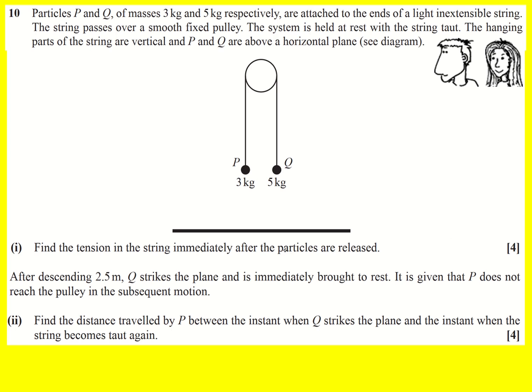Find the tension in the string immediately after the particles are released. Well let's look at the forces acting on P. There's going to be a weight which is three times G. G is gravity, 9.8, and then there's going to be a tension pulling it up because it's going over a pulley and this five kilogram weight is trying to pull it up.